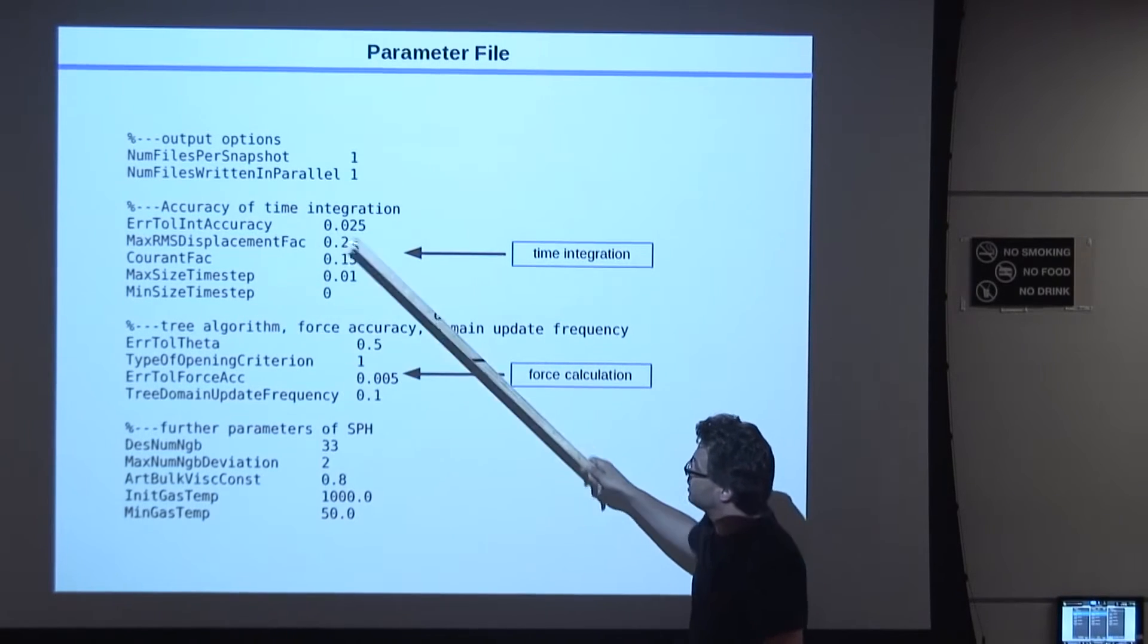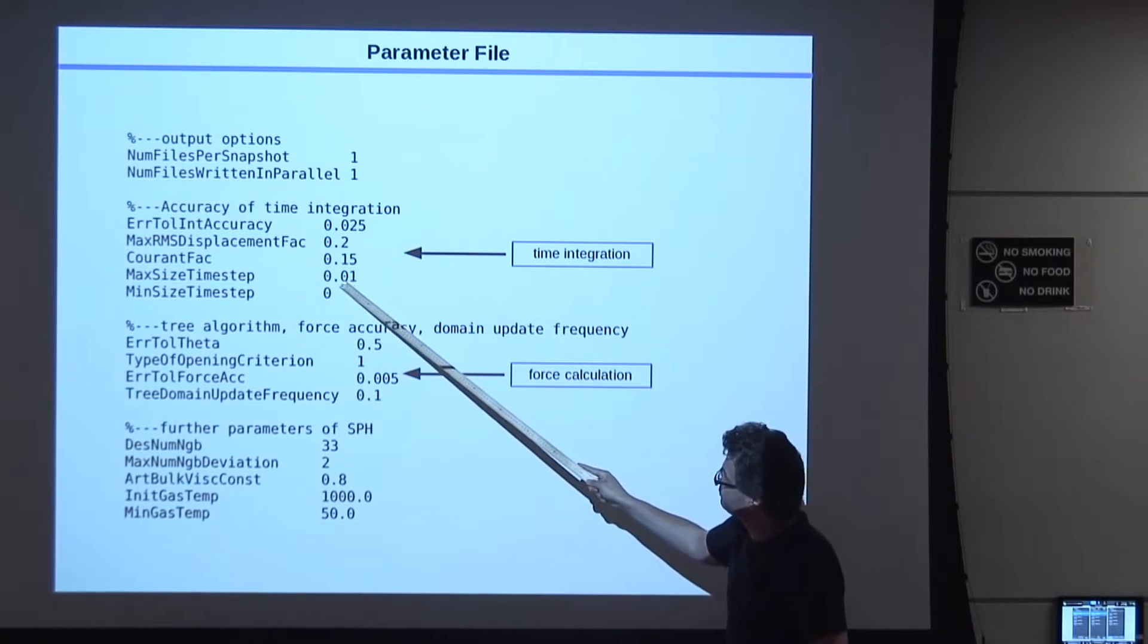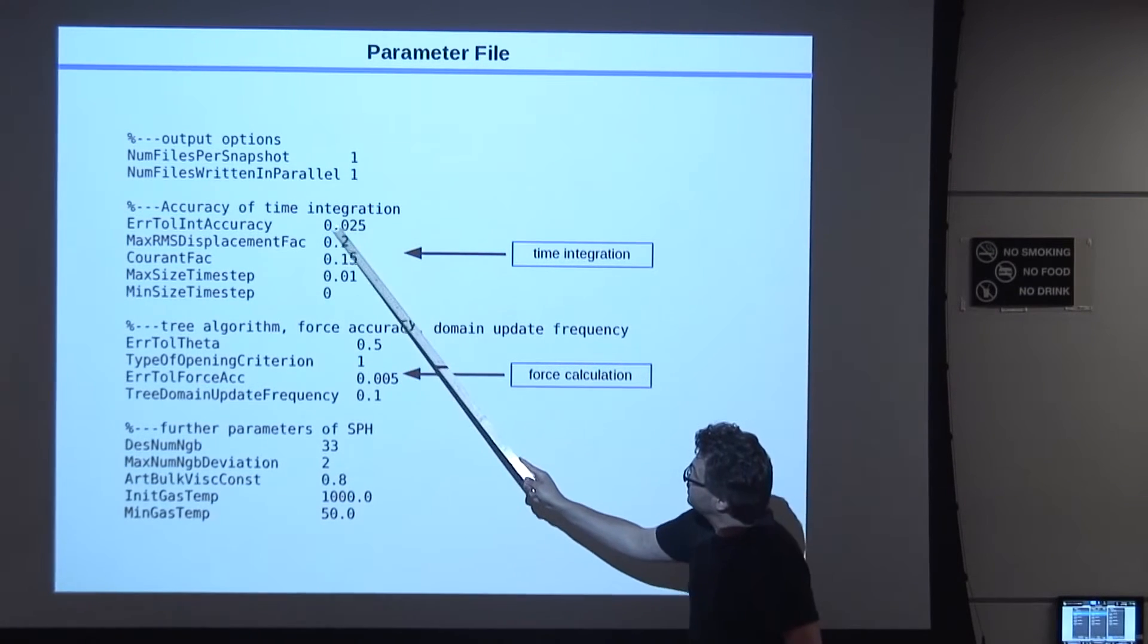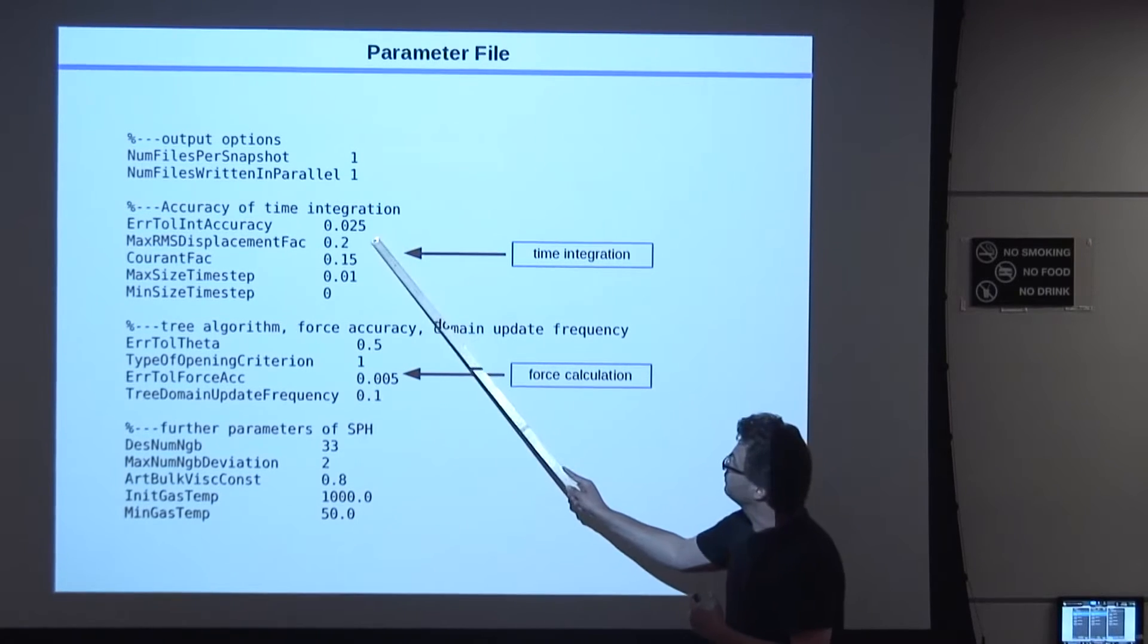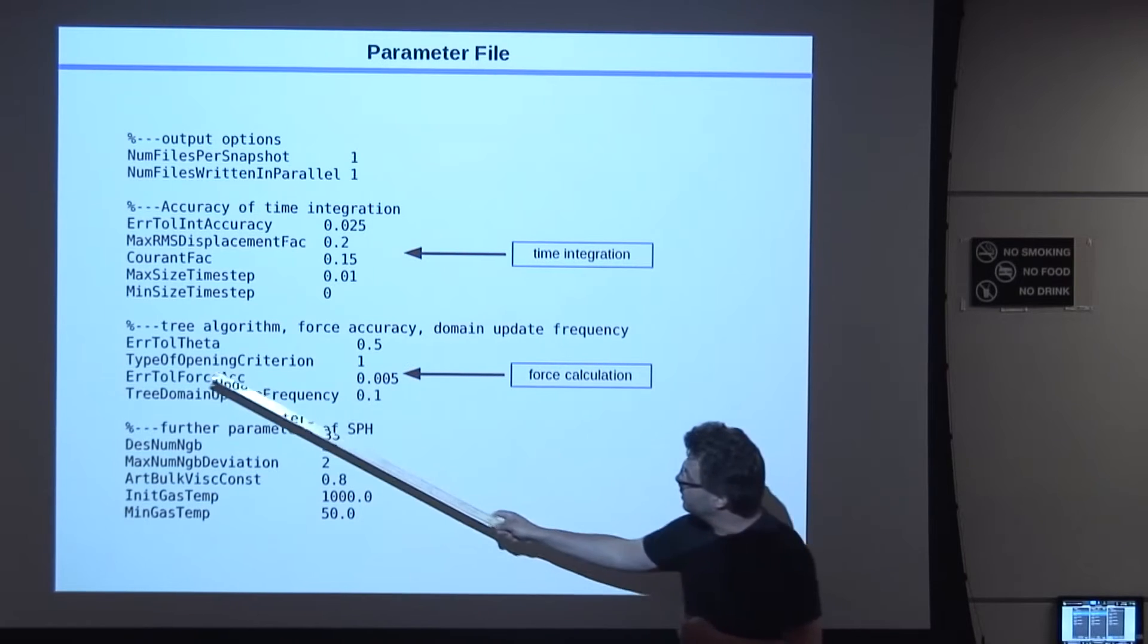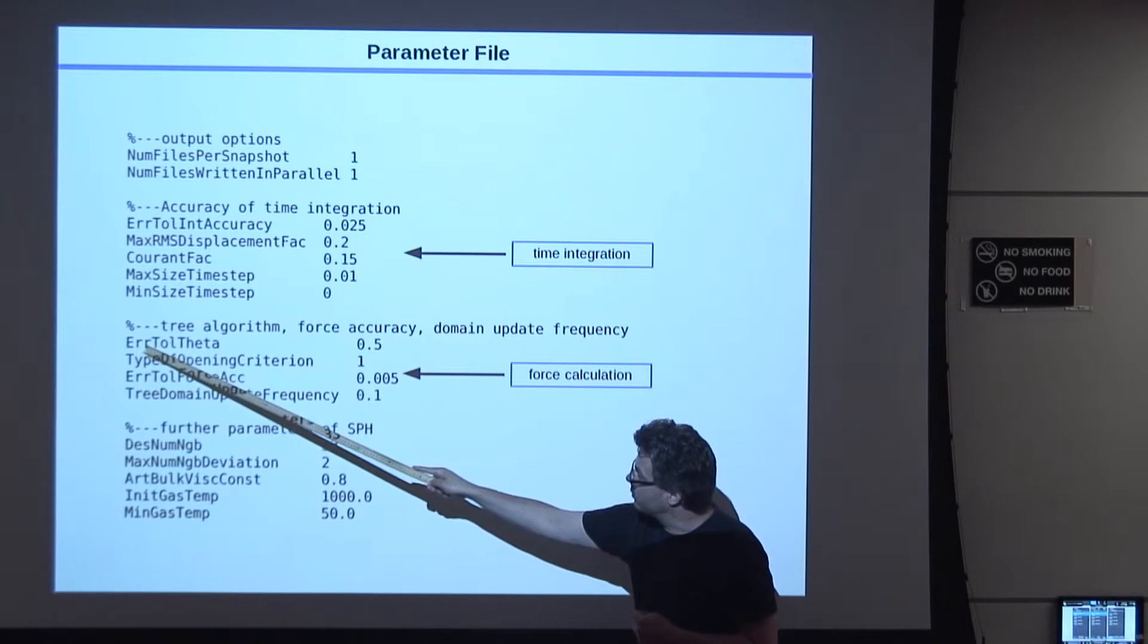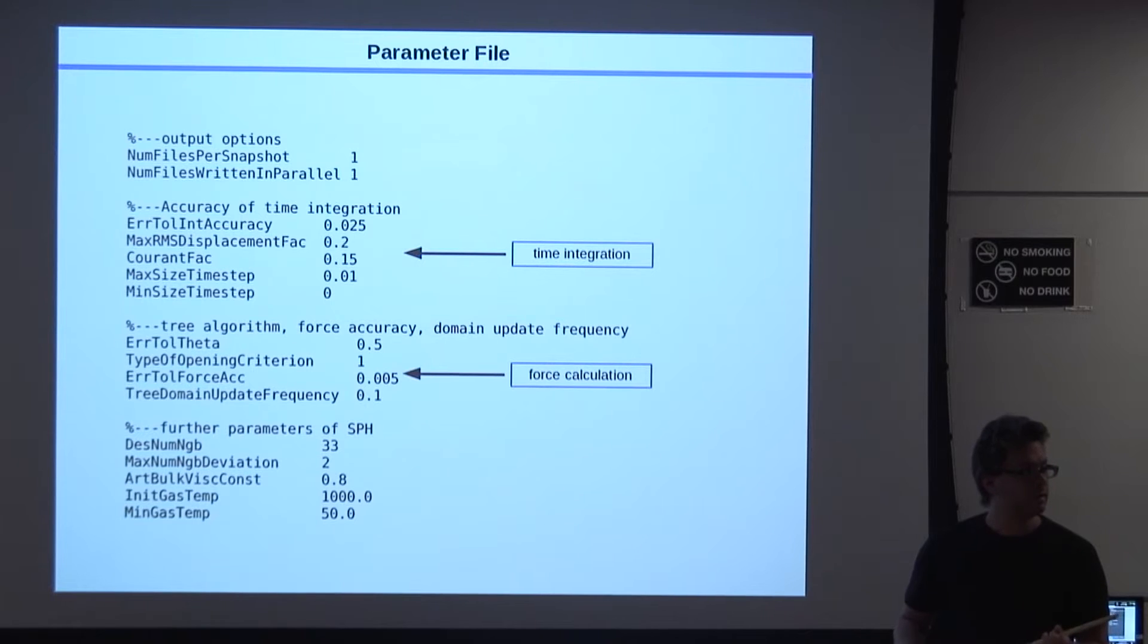These are things for the time integration. I will not talk too much about it. Essentially, these are default values. There's adaptive time stepping, as we discussed for the gravity. And this number here is a pre-factor, and the adaptivity comes from the acceleration. So particles that feel a higher acceleration will automatically get a smaller time step. But there's a pre-factor involved, and that's a scaling factor, like a courant condition.